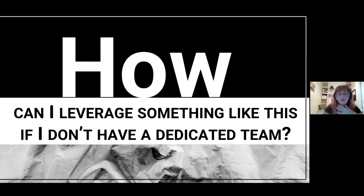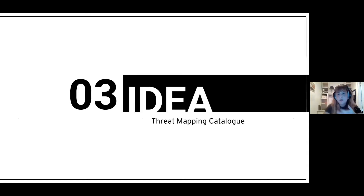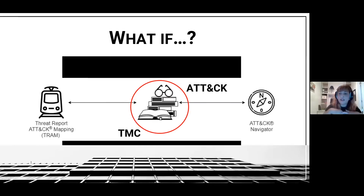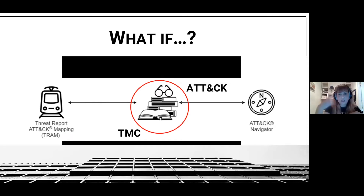So we started brainstorming and came up with the idea of the Threat Mapping Catalog, which is basically a link between the Threat Report attack mapping in TRAM and the ATT&CK Navigator. What this app does is leverage ATT&CK through the TAXII server, build all the information from the website into a database, create relations between that data, and then link it. If you want to add more information, you can use TRAM, and you can automatically build those mappings into the Navigator.